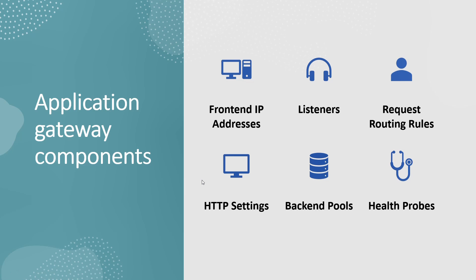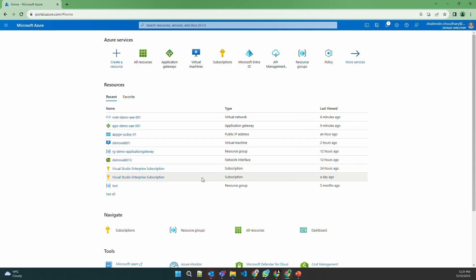Now I'll talk about the components and workflow of Application Gateway. The components include frontend IP address, listeners, routing rules, HTTP settings, backend pool, and health probes. I'll show these components in the Azure portal so it's easy to understand. This is not a hands-on video — I've already deployed the Application Gateway. I'll create a separate video for step-by-step deployment demonstration.